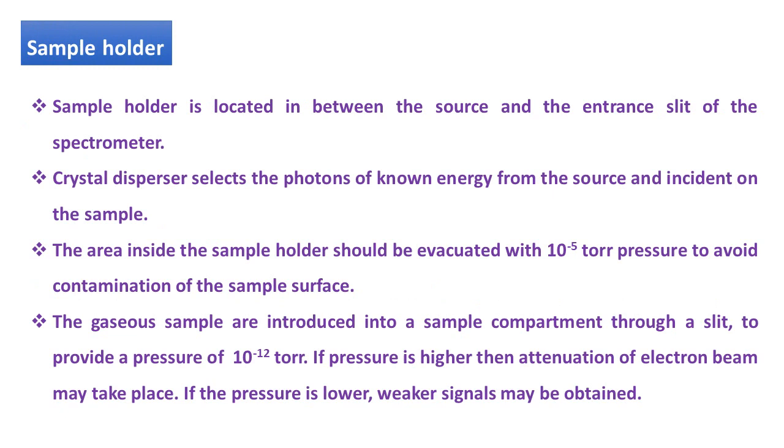Second component is sample holder. Sample holder is located in between the source and entrance slit of the spectrometer. The crystal disperser, which is present on the Rowland circle, selects the photons of known energy from the source and incident on the sample surface. The area inside the sample holder should be evacuated with 10 to the minus 5 torr pressure to avoid the contamination of the sample surface. And the gaseous samples are introduced into the sample compartment through a slit to provide a pressure of 10 to the minus 12 torr.